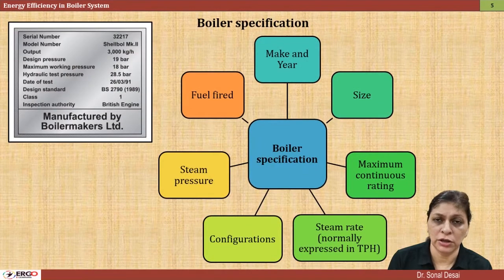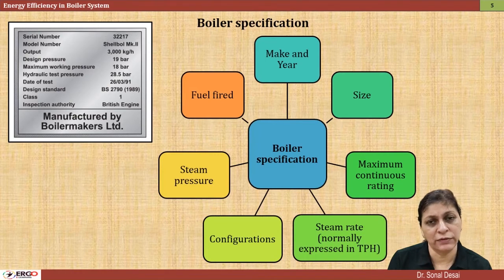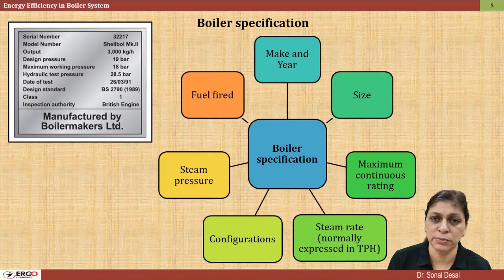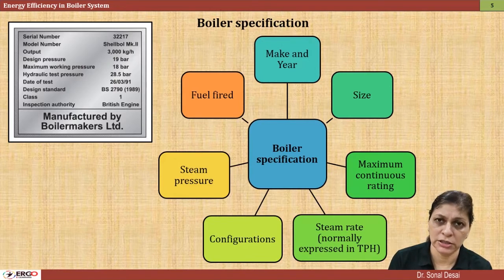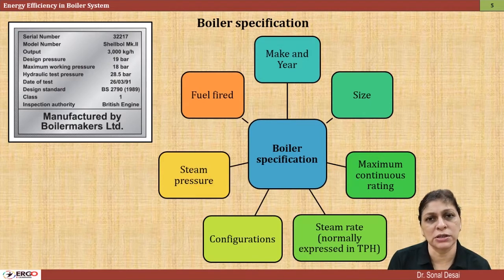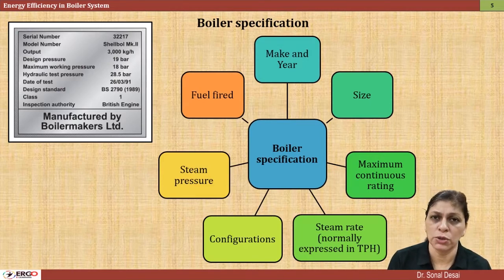Specifications of the boiler are discussed in detail. When we talk about a boiler, its size, its pressure generation, ratio of burning fuel, the steam rate, and steam production capacity — these are the features used to compare or specify the boiler, and they are discussed.